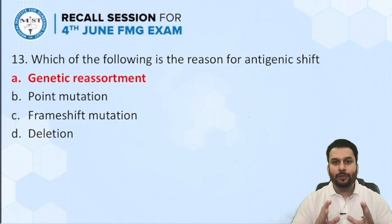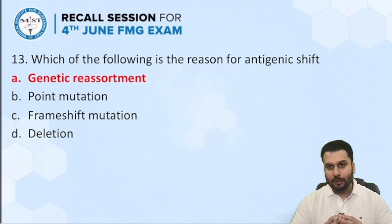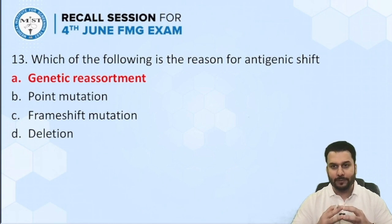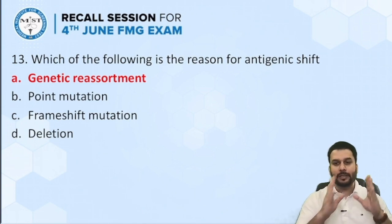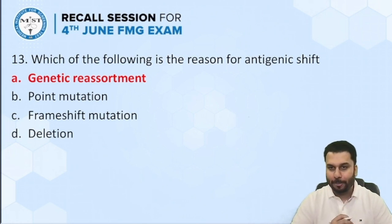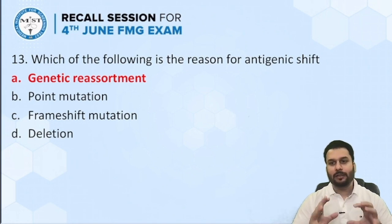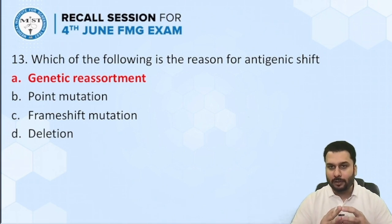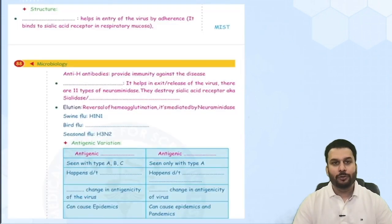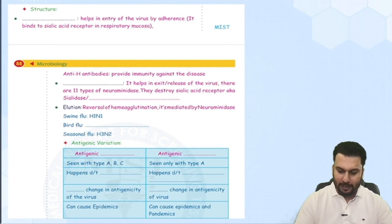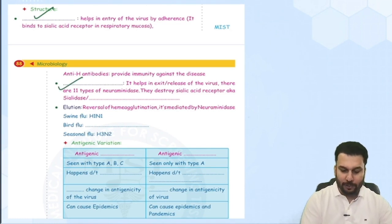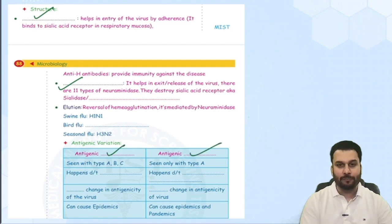Another question on the same topic: which of the following is the reason for antigenic shift? We have talked about the antigenic variation that constantly happens in influenza virus through two mechanisms: antigenic drift or antigenic shift. The correct answer for antigenic shift is genetic reassortment. Point mutation is the reason for antigenic drift, not for the shift. This is in the notes under the influenza virus topic.